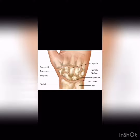The largest carpal bone is the scaphoid, and the smallest is the pisiform. One interesting fact about the pisiform is that it is the smallest sesamoid bone in the body. A sesamoid bone is a bone that lies inside tendons or is formed within tendons. The pisiform is one such bone.